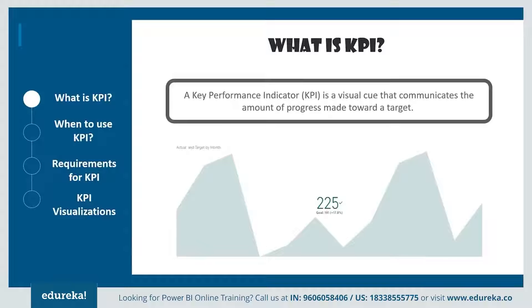High-level KPIs may focus on the overall performance of the enterprise, while low-level KPIs may focus on internal things like employees in departments such as sales, marketing, et cetera.